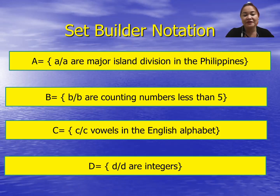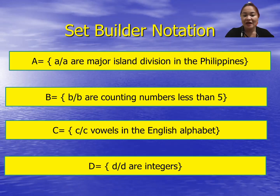For C: the set of all c such that c are vowels in the English alphabet. And D: the set of all d such that these are integers. That is how you write using set builder notation.